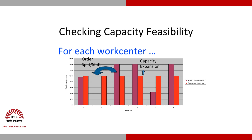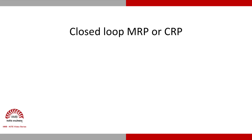Alternatively, as shown for week four, we can have short-term capacity expansion for that one week — for example, overtime — to make the plan feasible. Another option is rerouting: if any other resource can do the job, we reroute it for that time period. By doing order split, shift, capacity expansion, or rerouting, we can achieve feasibility.